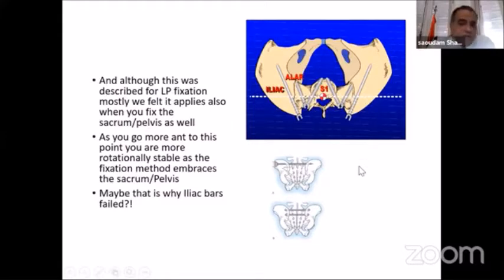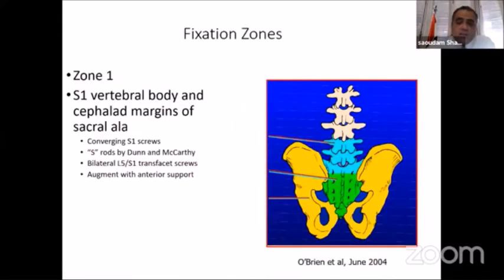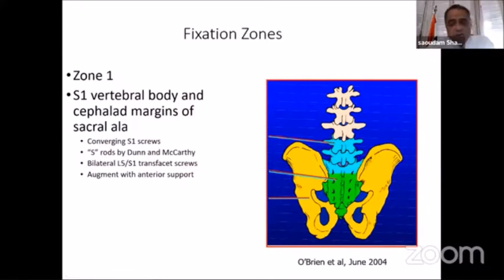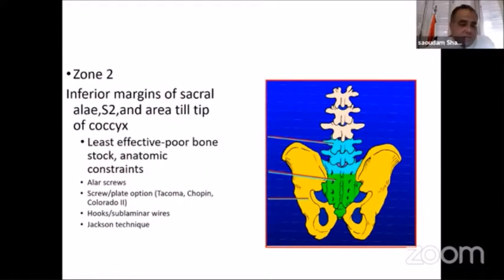The other consideration is the fixation zones. The blue area — the S1 vertebral body and the superior margins of the sacral ala, along with both iliac bones — represents zones 1 and 3 of fixation. These are strong areas for fixation. Try to avoid the green area, which is the inferior margin of the sacral ala, S2, and the area around the foramina, as it has the least effective bone stock with anatomical constraints.